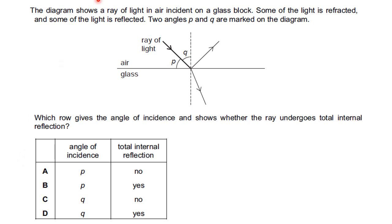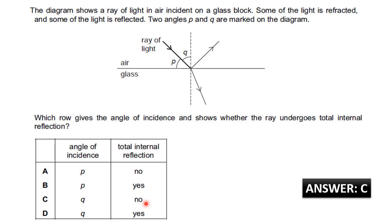Question 1: The diagram shows a ray of light in air incident on a glass block. Some of the light is refracted and some is reflected. Two angles P and Q are marked on the diagram. Which row gives the angle of incidence and shows whether the ray undergoes total internal reflection? The angle of incidence is the angle between the normal and the incident ray, so angle Q is the angle of incidence. From the diagram you can see some rays are refracted — so there is no total internal reflection. The answer is C.